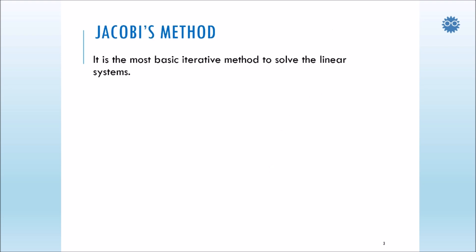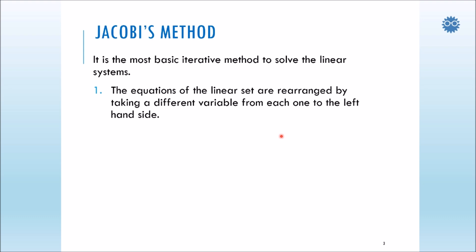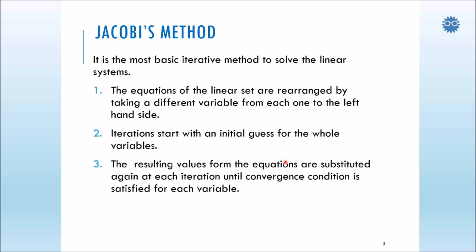Jacobi's method is the most basic iterative method to solve linear systems. The equations of the linear set are rearranged by taking a different variable from each one to the left-hand side. This is similar to the simple iterations method in some way, but instead of using it in one equation, we use it for a set of linear equations. Iterations start with an initial guess for all variables, and the resultant values are substituted again for the next iteration until the convergence condition is satisfied for each variable.